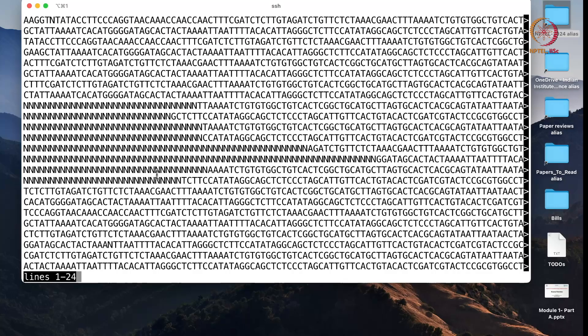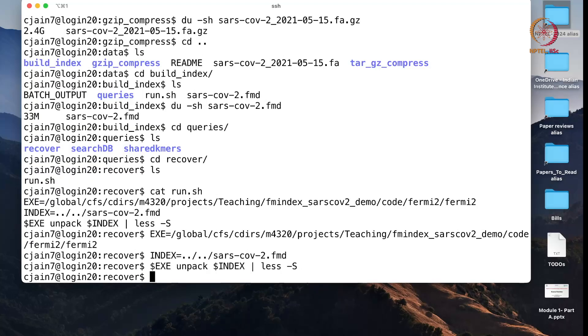You also see some of the N characters which means that some of the genome sequences were not fully resolved and there is ambiguity whether there is a A, C, G or T there. So some of the genome sequences can also have N characters. This was just to show that the original genome sequences can be recovered exactly from this small index file.